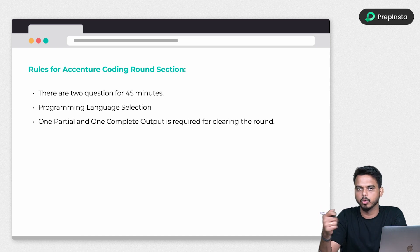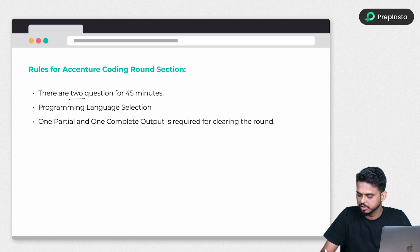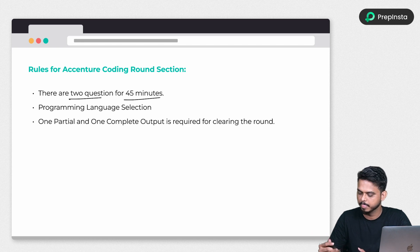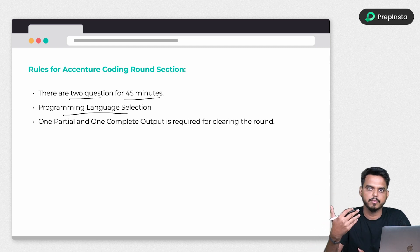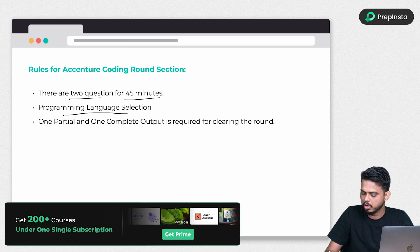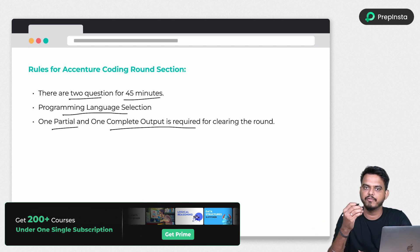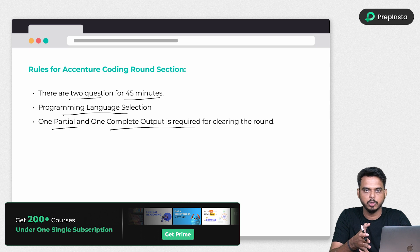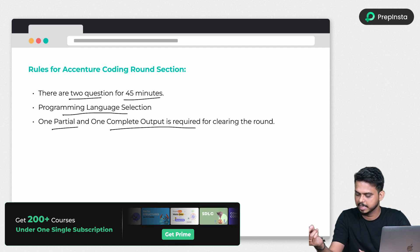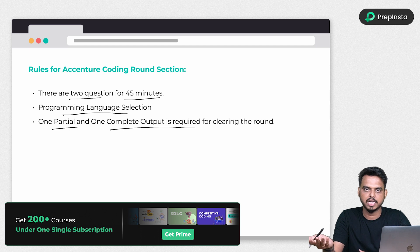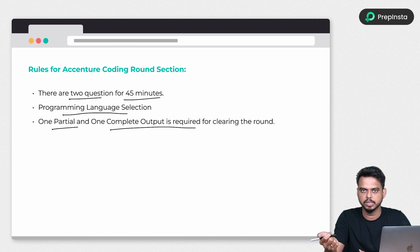First, let's understand the rules you need to follow before attending the coding question. You will be given two questions that you have to solve within 45 minutes, so you can expect easy and medium level questions. The programming language you can select from a dropdown — it could be C, C++, Java, or Python. To crack the coding round, you have to solve one question completely and one partially — even passing two test cases out of four is sufficient.